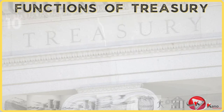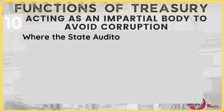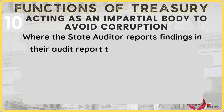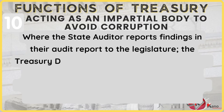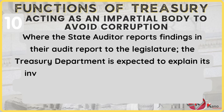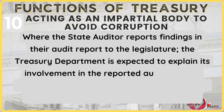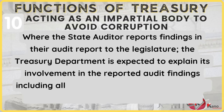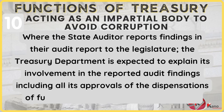In instances where the state auditor, such as the Auditor General, reports findings in their audit report to the legislature, the Treasury Department is then expected to explain its involvement in the reported audit findings, including all its approvals of the dispensations of funds, to the Public Accounts Committee.